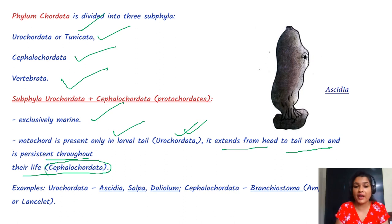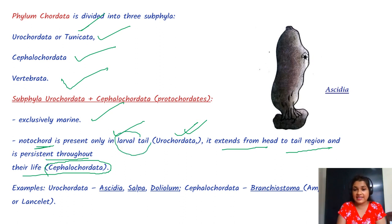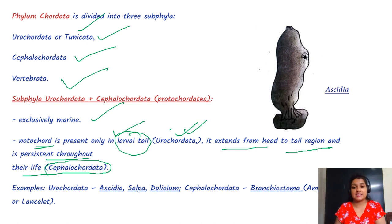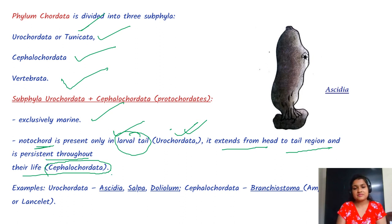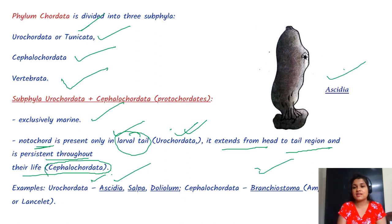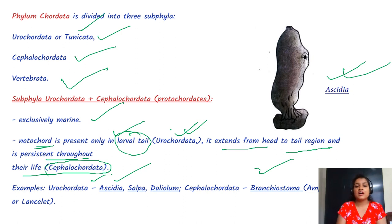In Cephalochordata, the notochord persists throughout life. Examples: Urochordata — Ascidia; Cephalochordata — Branchiostoma.